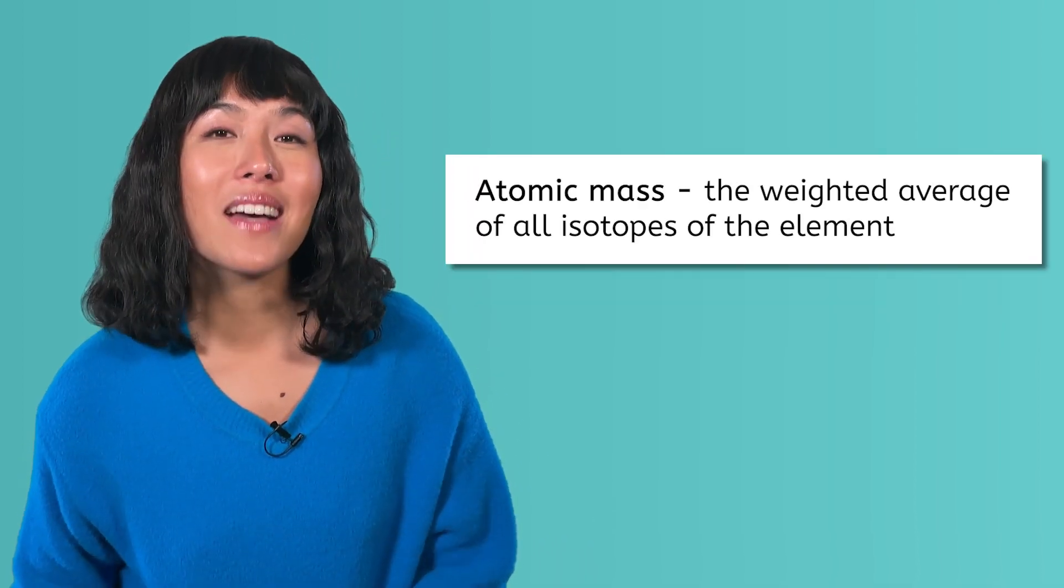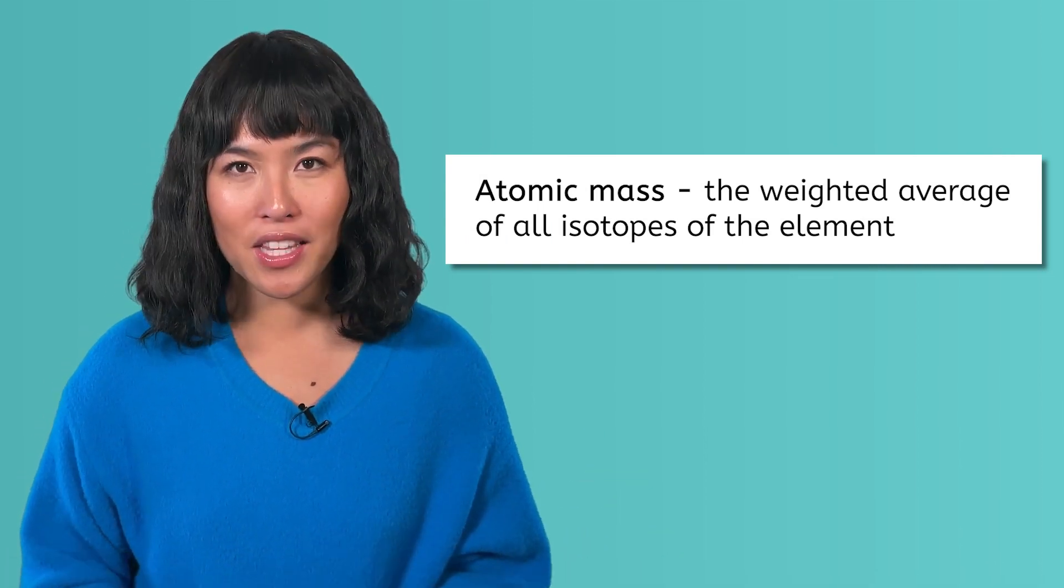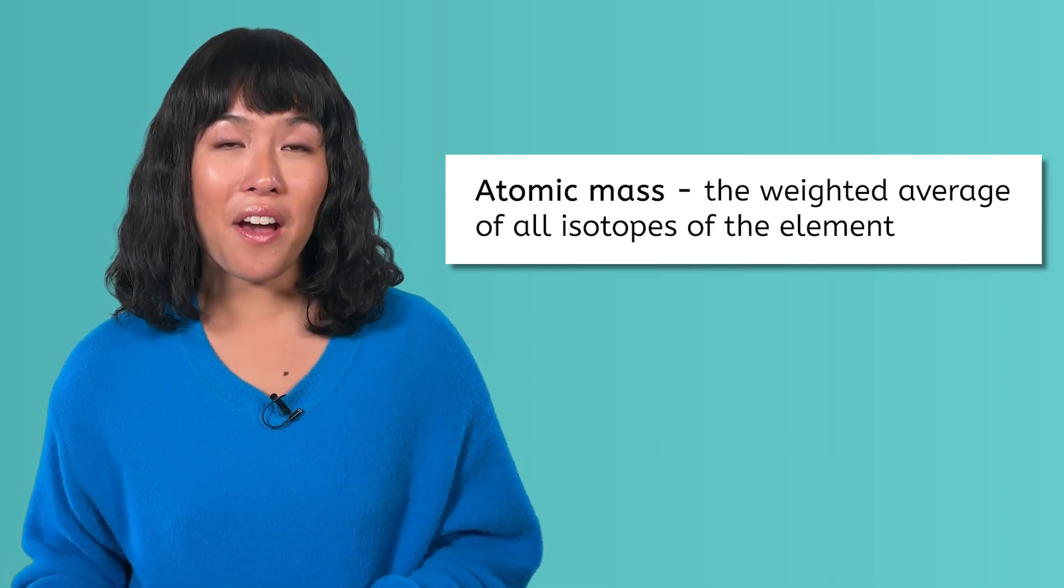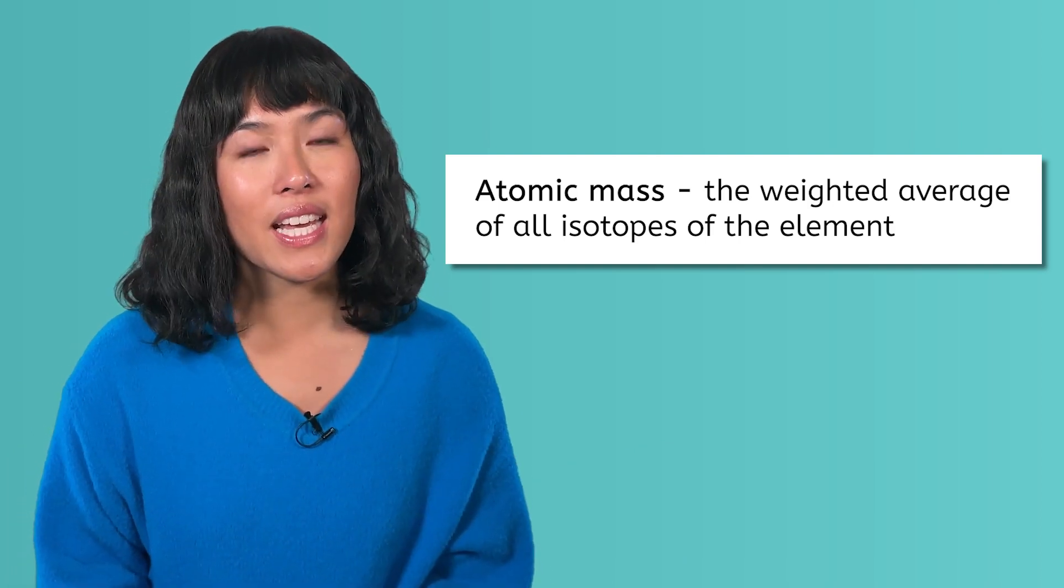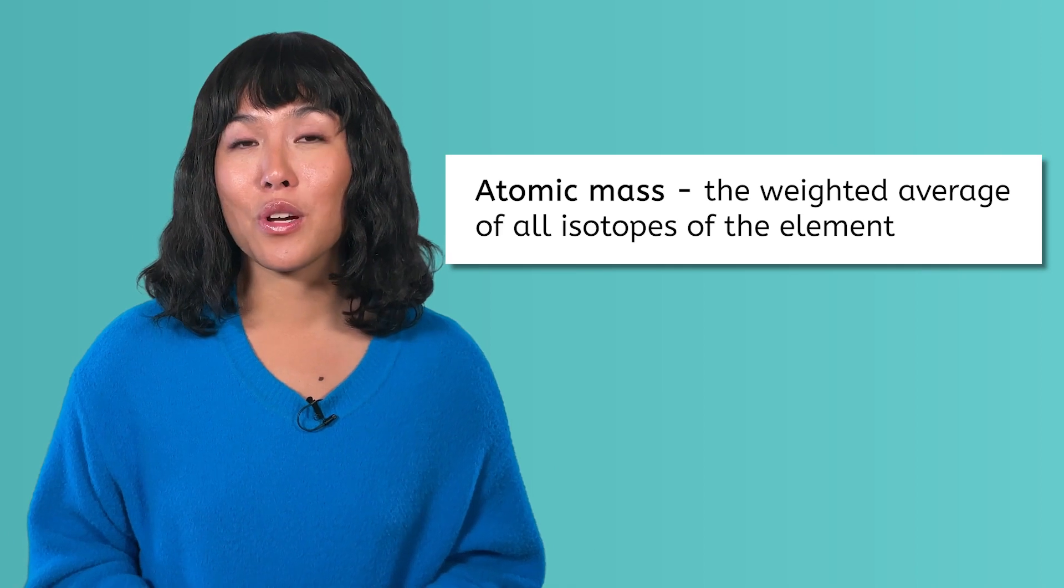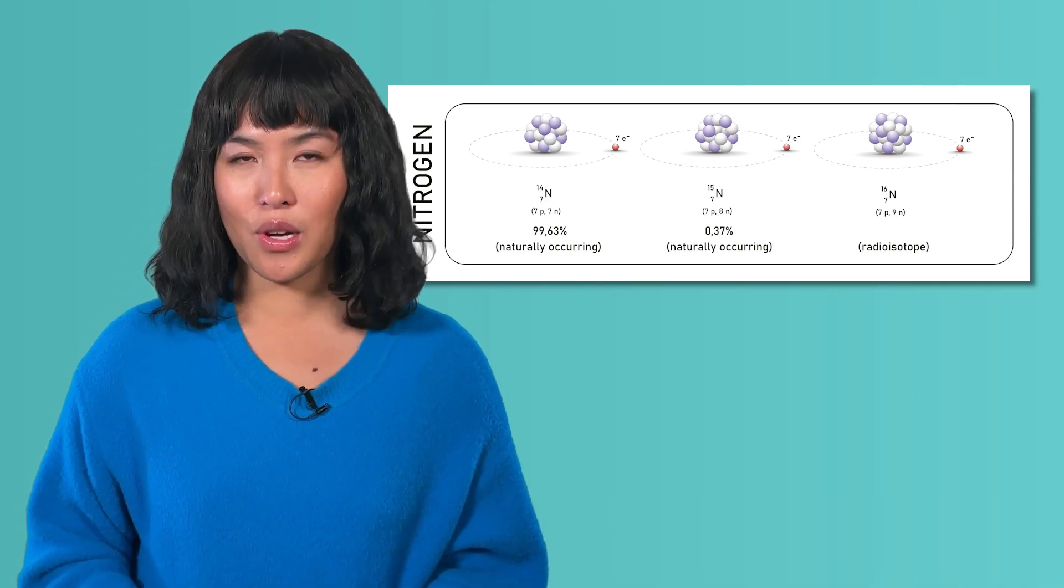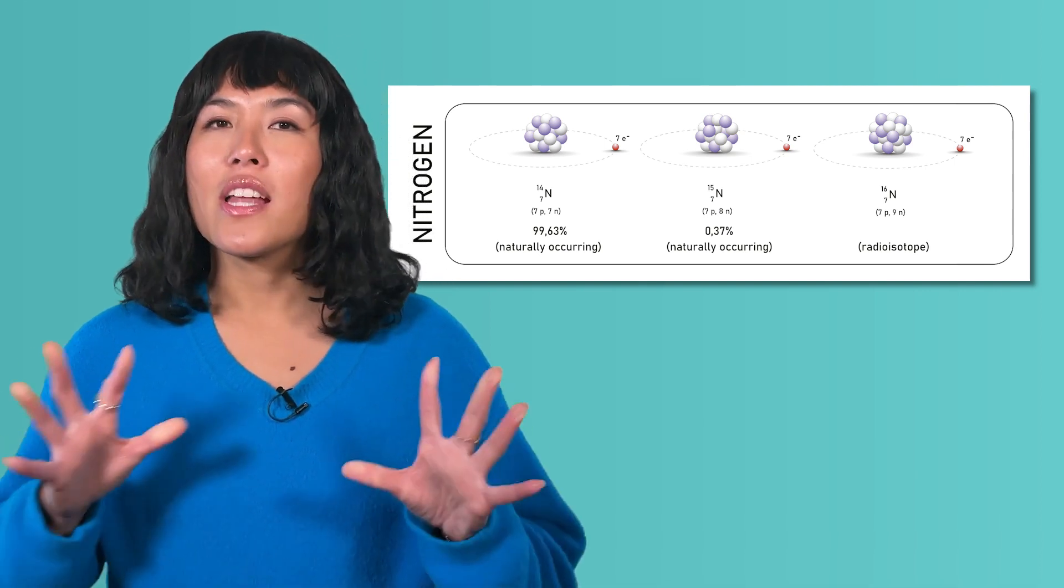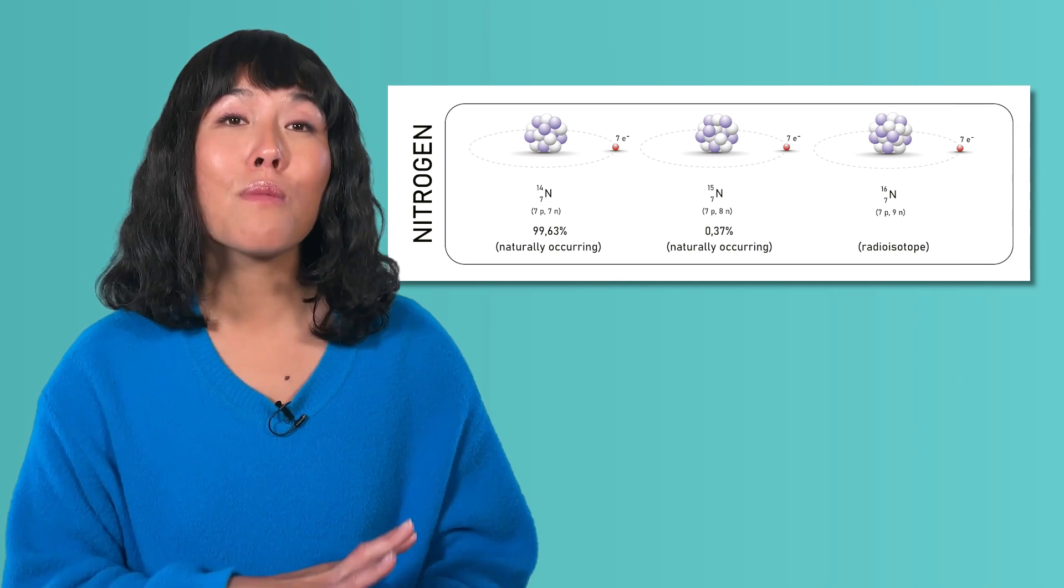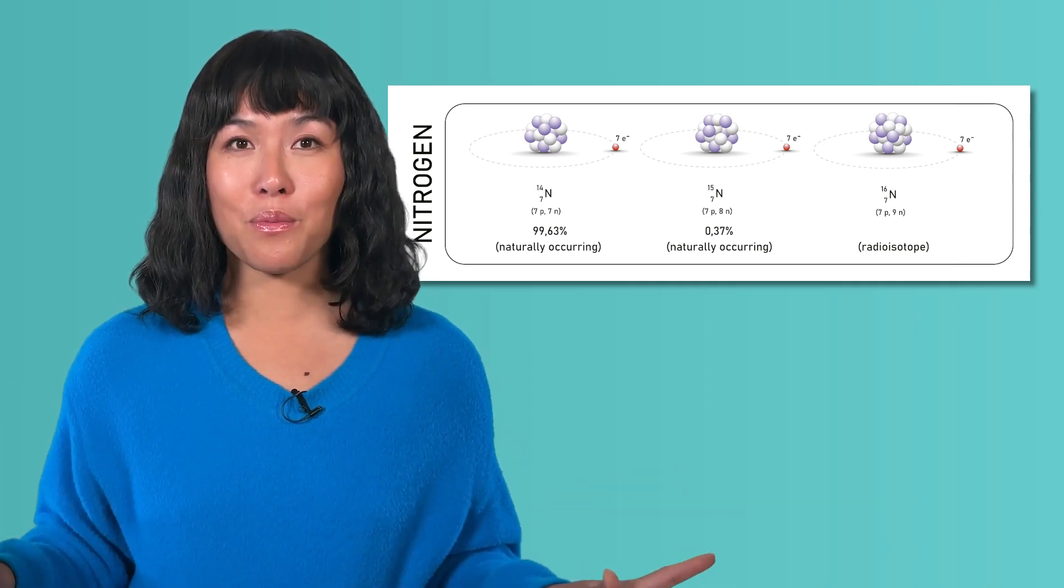The atomic mass of an element is a weighted average of all of the isotopes of the element. A weighted average is more than a simple average of all of the weights. You must also take into account how abundant each isotope is in nature. Let's look at nitrogen, for example. Nitrogen has three isotopes: nitrogen 14, nitrogen 15, and nitrogen 16.